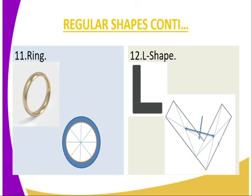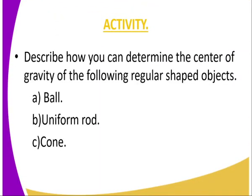Those are the various regular shaped objects whose center of gravity can be determined using the procedures we have discussed. To check your understanding, try to answer the following: describe how you can determine the center of gravity of a ball, a uniform rod, and a cone.